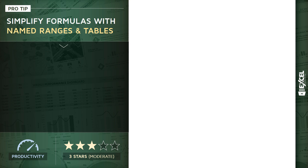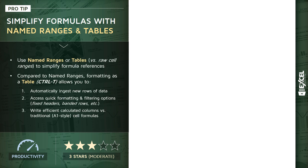Alright, time to talk about simplifying formula references using named ranges and tables. This is a three-star productivity tip — a little bit more advanced and nuanced than some of the more basic tips we've covered. Basically, we're going to talk about how to use named ranges or tables compared to raw cell ranges like A1 through A10 to simplify our formula references.